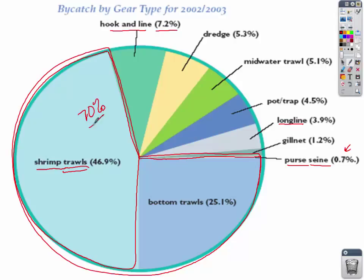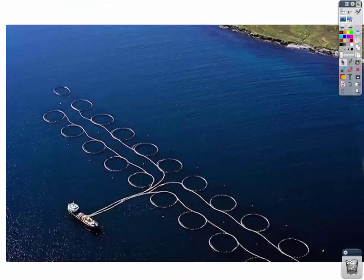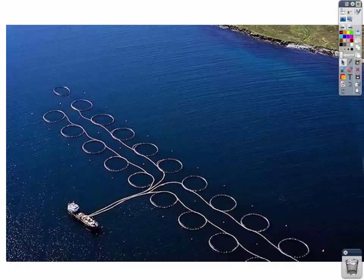Not only do trawling nets hurt the ecosystem, stir up sediment, and destroy the bottom surface of the ocean, but they also catch a tremendous amount of bycatch. So now that we've decided the oceans are being depleted and bycatch is a problem, we need some solutions. One solution is aquaculture.